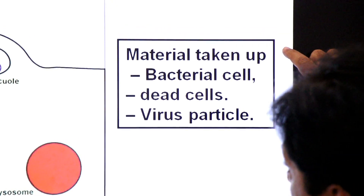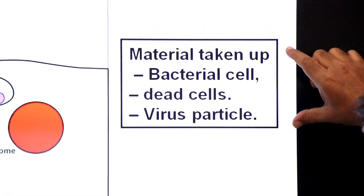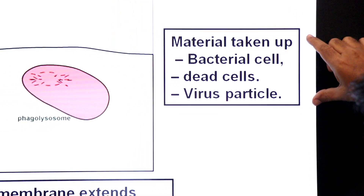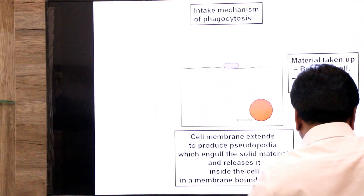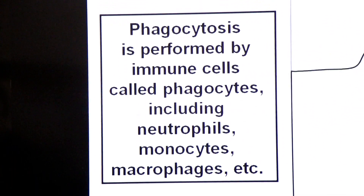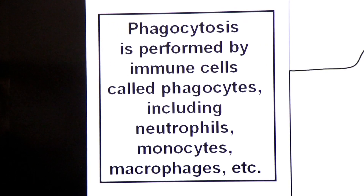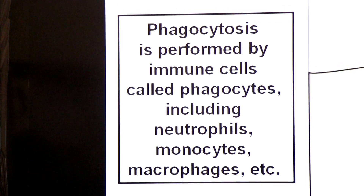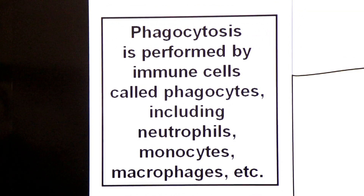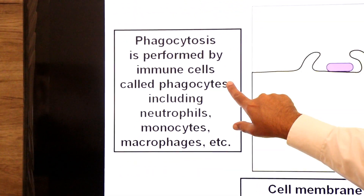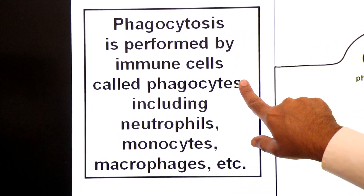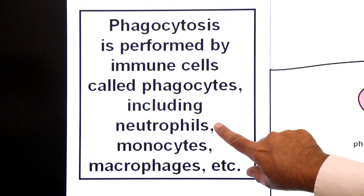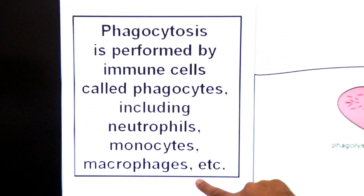The material taken up in phagocytosis includes bacterial cells, dead cells, or virus particles. Phagocytosis is performed by immune cells — white blood cells — which provide immunity to defend against pathogens. These specialized cells are called phagocytes, including neutrophils, monocytes, and macrophages.